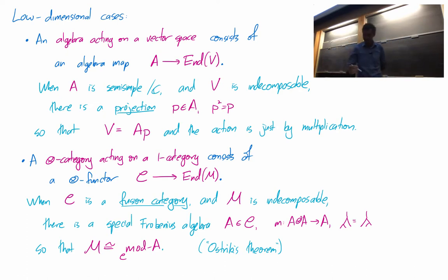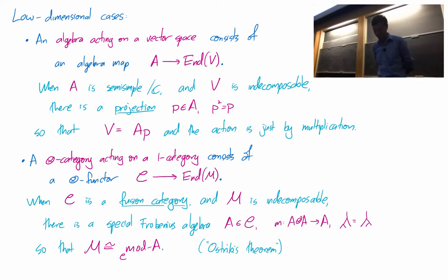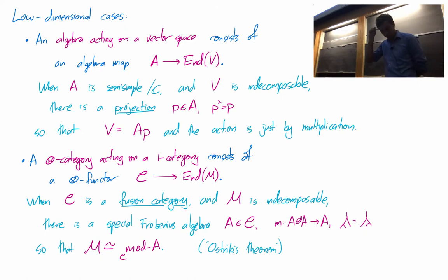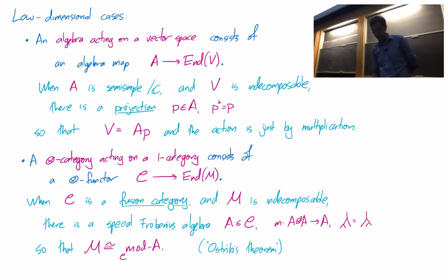Let's think about the easiest possible case: an algebra in the entirely conventional sense, just some vector space with a multiplication acting on a vector space. That's some algebra homomorphism from your algebra A into the algebra End of V, where V is your vector space. When everything is semi-simple enough — say the algebra is semi-simple over the complex numbers and V is some decomposable representation — something marvellous happens. You can find some idempotent inside A so that the representation was really just A cut down by that projection. We've taken the module and discovered some data internal to A.